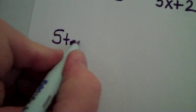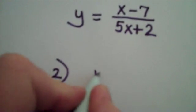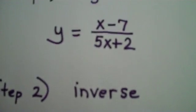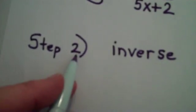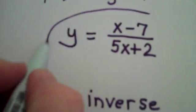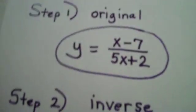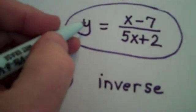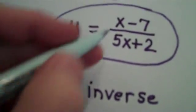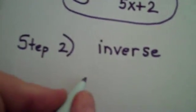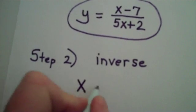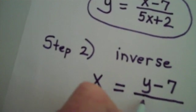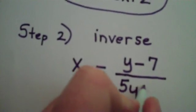Now, step two is to start finding a formula for the inverse function, and the first part of that is actually very easy. You're going to take the original function, and to find the inverse function, you're going to interchange the x's and y's. For example, if it used to say y, it now says x, and if it said x, it now says y. So my inverse will be written as x equals y minus 7 divided by 5y plus 2.